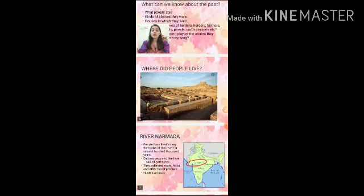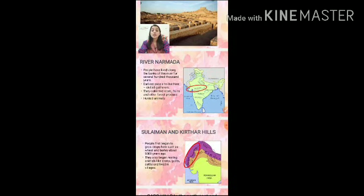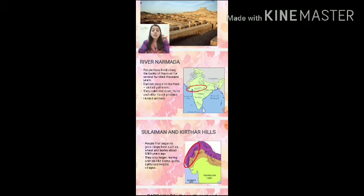Where did people live in historic times? People lived along the banks of River Narmada for several hundred thousand years. The earliest people along the banks of the Narmada were skilled gatherers — they collected roots, fruits, and other forest produce, and they also hunted animals. As seen on the map, River Narmada covered parts of Gujarat, Maharashtra, and Madhya Pradesh.